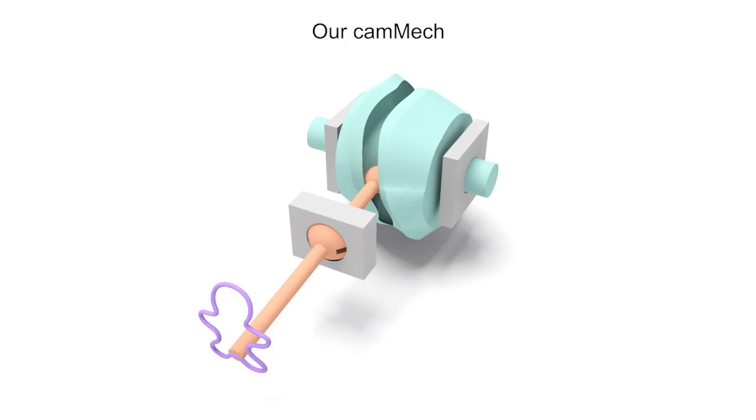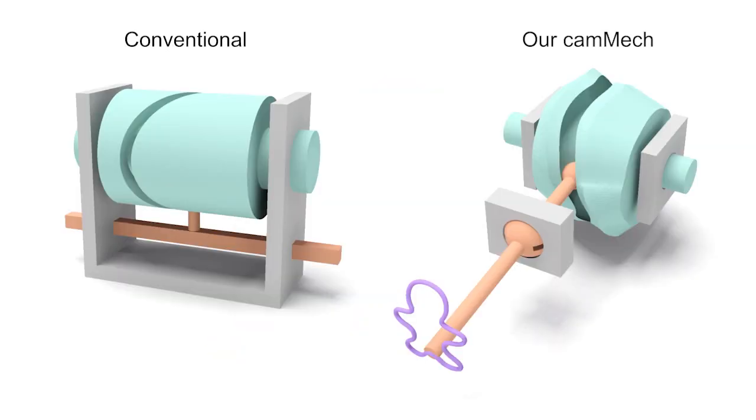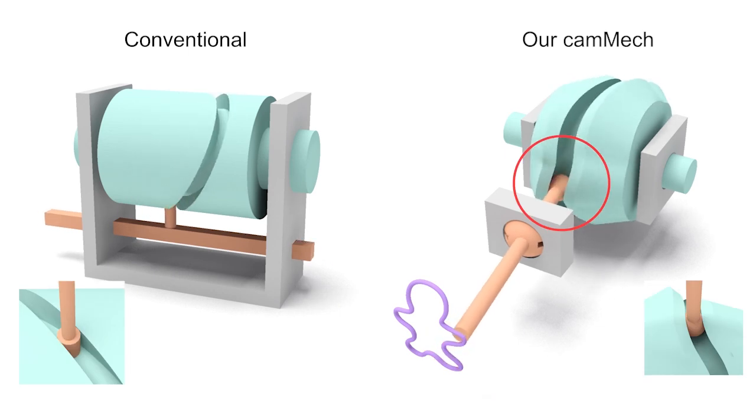Our cam mech. We model a new kind of cam mech that can output free-form motion trajectories on both planar and non-planar surfaces. A unique feature of our cam mechs is the ball move and groove joint between the cam and the follower.